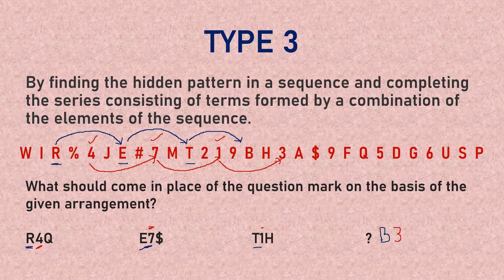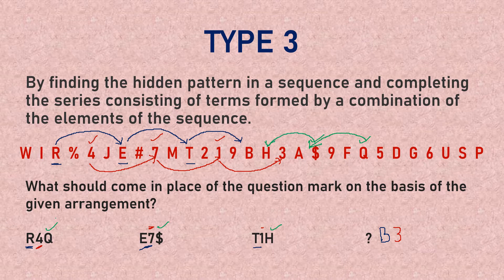For the third element: Q, dollar sign, H — we find Q in the sequence, then skip 2 positions to reach the dollar sign, then skip 2 more positions to reach H. Applying the same pattern, skipping 2 positions from H gives us 1. So the answer to be placed instead of the question mark is B, 3, 1.